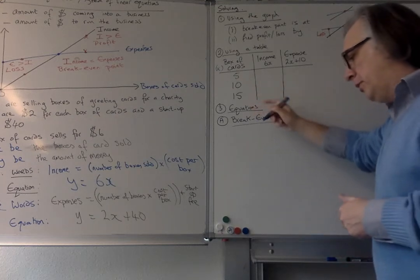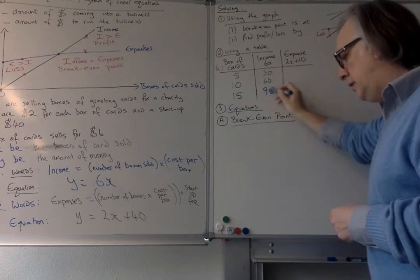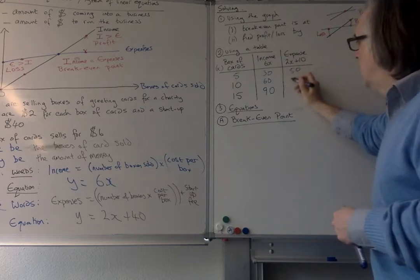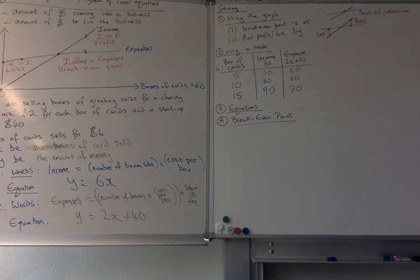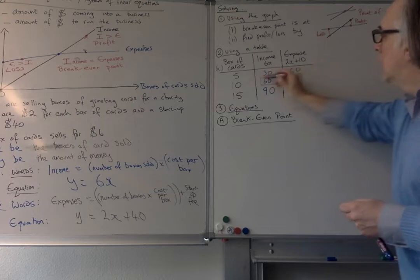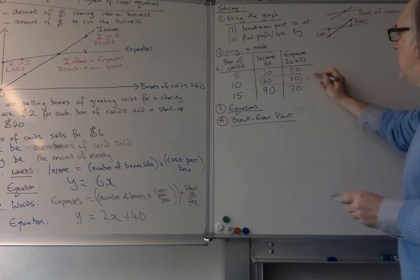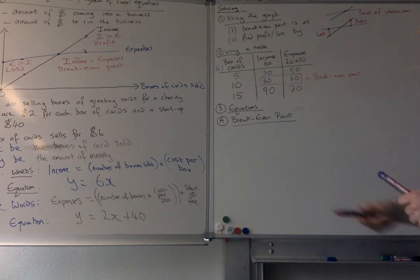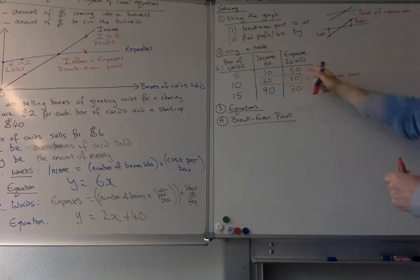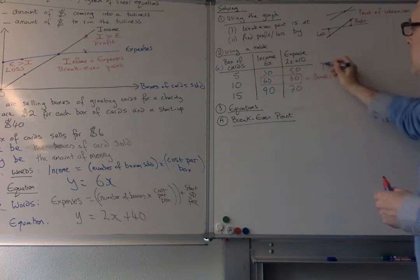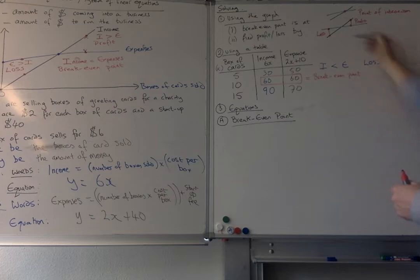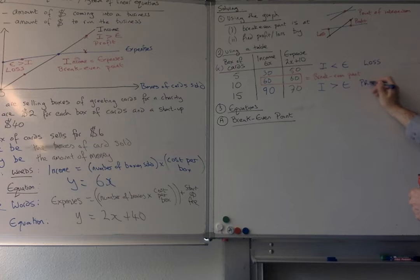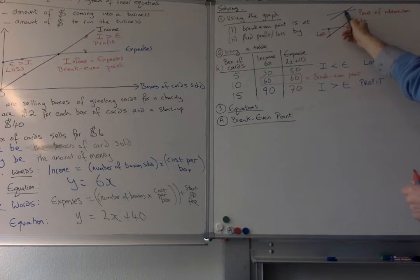So what you should have found is when you were popping the numbers in here you've got 30, 60 and 90 for the income and then for the expenses I'll just go with another colour, you've got 50, 60 and here you should have got 70. So when we're looking at these you notice this, the income and expenses are equal to each other like they are here so this is the break even point. Obviously if these numbers don't turn up you might have to change the table settings and find the numbers where these numbers actually appear that are the same.